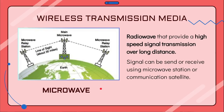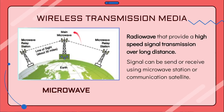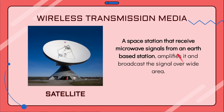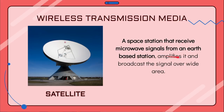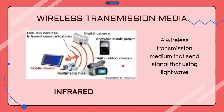Then we have microwave — and please note, this does not refer to the microwave in your kitchen. Microwave here is a radio wave that provides high-speed signal transmission over a long distance, even from one country to another. Signals can be sent or received using microwave stations, as shown in the diagram, and also via communication satellites. A satellite normally receives microwave signals from a microwave station on earth, amplifies them, and broadcasts the signals over a wider area.